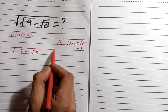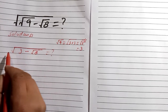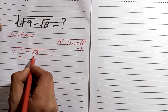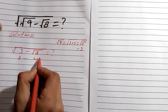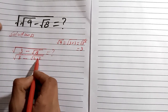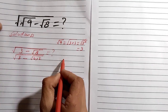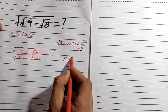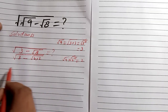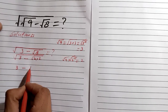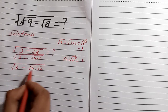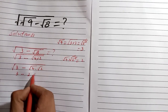Now for root 8: we can write 8 in factor form as 4 multiplied by 2. We know that root 4 is equal to 2 squared, and the square cancels with the root, leaving 2. So in place of root 8 we write 2 root 2. Our expression becomes 3 minus 2 root 2.